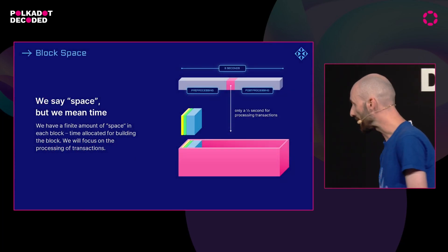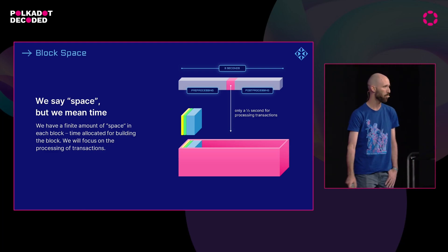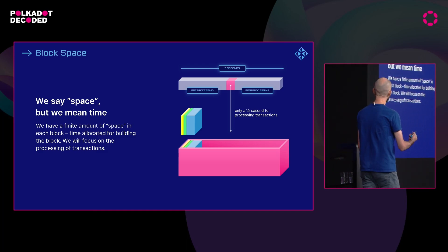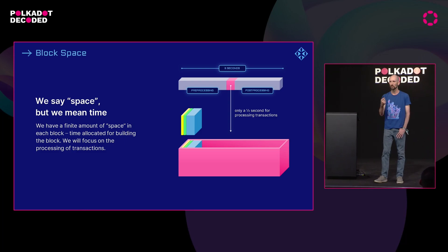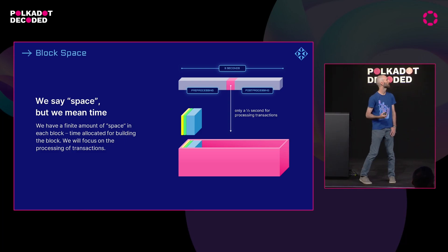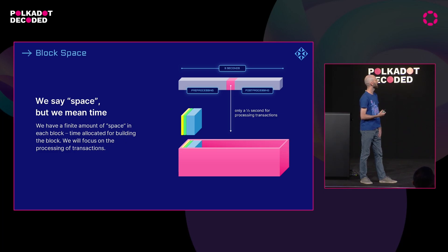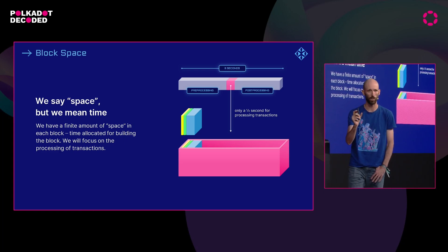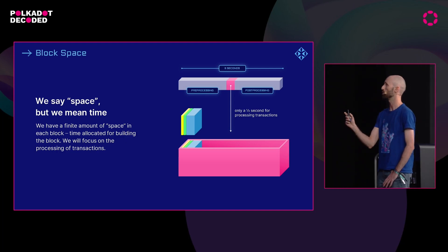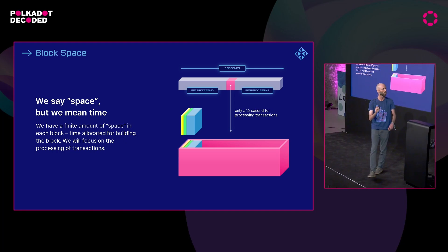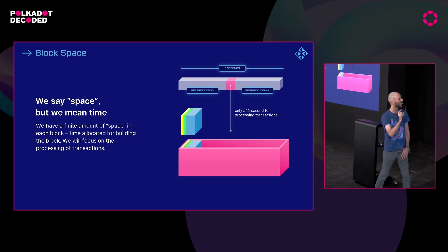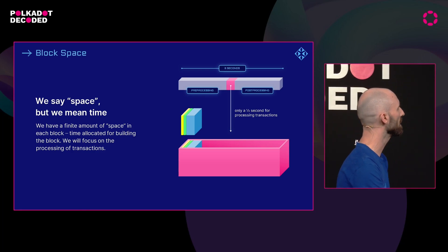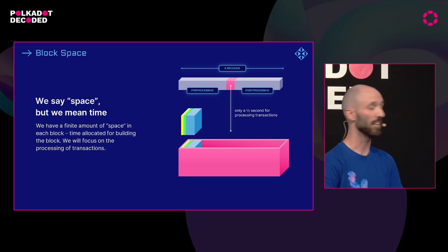What do we mean by building a block? A block builder or block producer decides how to fill the block with transactions. Now, if the blocks on your blockchain are every six seconds, you actually only have a small fraction of that to process transactions — you might have as short as half a second of what we call execution time. That is the space, and when we say space, we're really talking about processing time, that the block producer can fill.